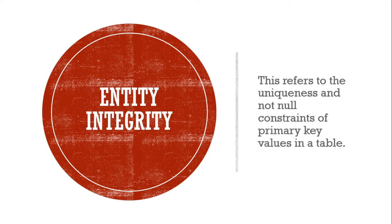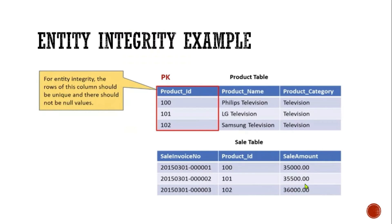First is entity integrity. This refers to the uniqueness and non-null constraint of primary key values in a table. By enforcing entity integrity, the database ensures that each row in the table can be uniquely identified and no two rows are identical. Here we have two tables — a product table with columns product ID, product name, and product category, and a sale table with sale invoice number, product ID, and sale amount. In the product table, product ID is a primary key. To maintain integrity, the rows of this column should be unique with no null or duplicate values.